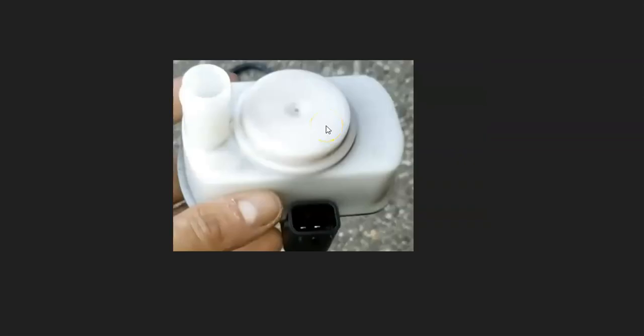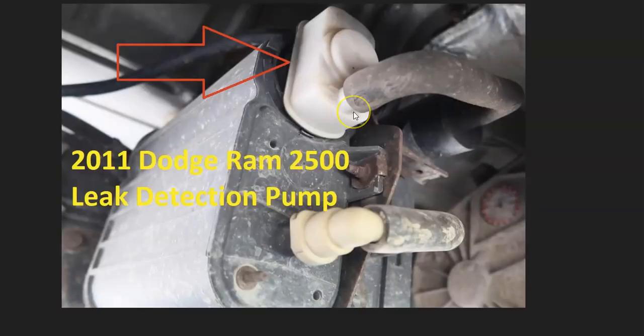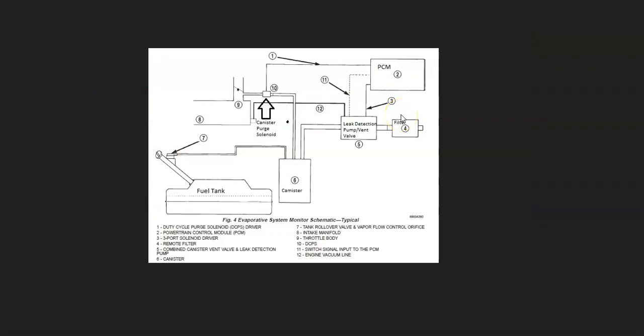Quite often, all three of these things are inside of one package that usually is located on the charcoal canister, although it can be separate. Sometimes it could be in other places. And since there can be some slight differences in what's going on inside of a Dodge EVAP system, it can be a good idea to get a diagram for your particular Dodge for the year, the model, and things like this.